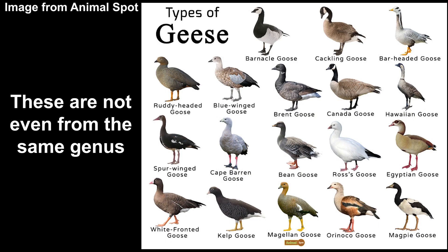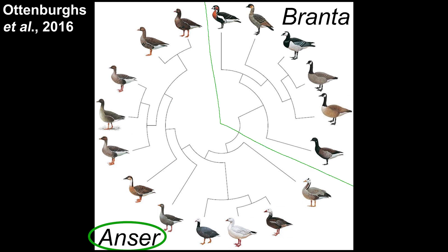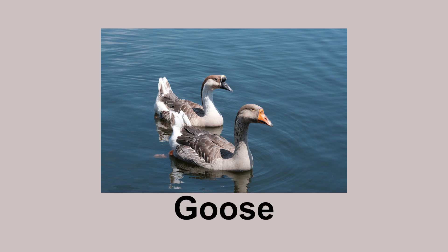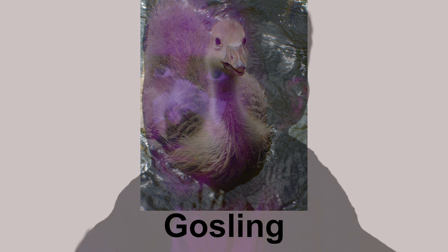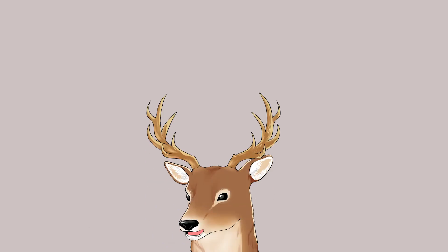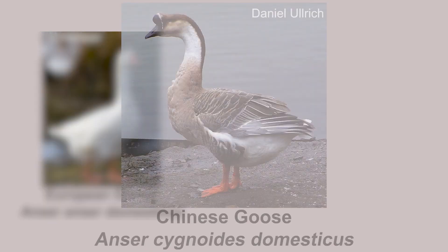Goose in general is actually a large group of animals. The true geese are categorized in the genus Anser. The word 'goose' refers to both sexes, mostly for the adults — the young ones are called goslings. There are actually two types of domestic goose: the European goose and the Chinese goose.